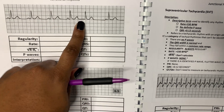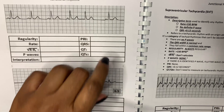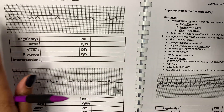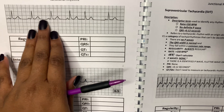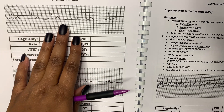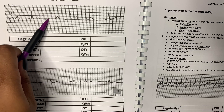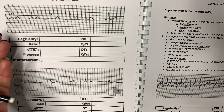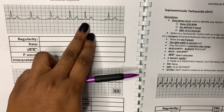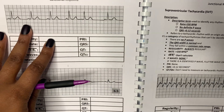So if you look at this PJC, first things first, always identify the underlying rhythm. You can see this underlying rhythm is definitely regular. Just without measuring, I can see that it has one P wave, it's upright, it's one and one in the same. So obviously this is a sinus rhythm, but this PJC is disrupting the normal rhythm.